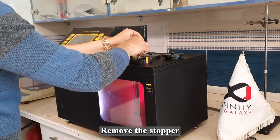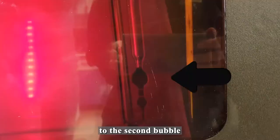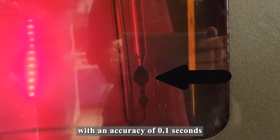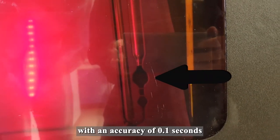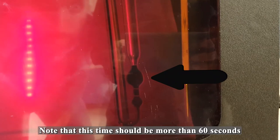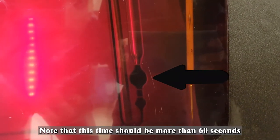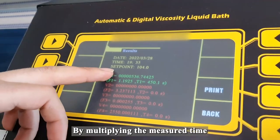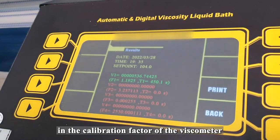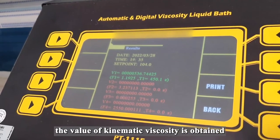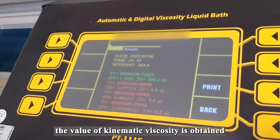Remove the stopper and measure the movement time of bitumen to the second bubble with an accuracy of 0.1 seconds. Note that this time should be more than 60 seconds. By multiplying the measured time by the calibration factor of the viscometer, the value of kinematic viscosity is obtained.